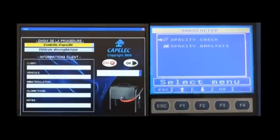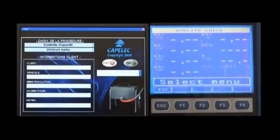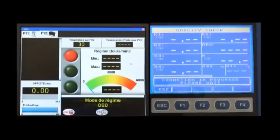Choose the type of opacity test, then select the vehicle type, registration plate, and engine speed mode.